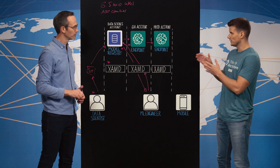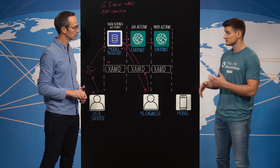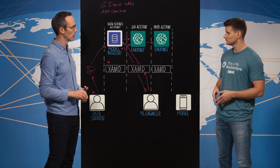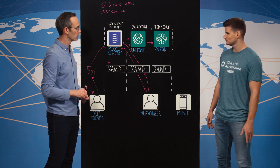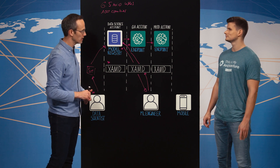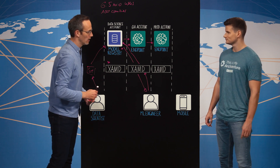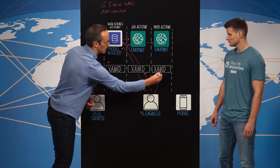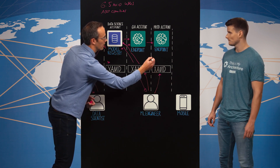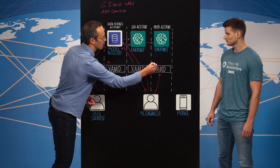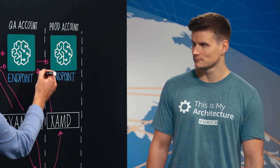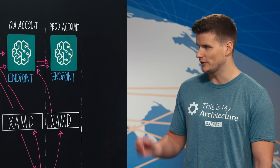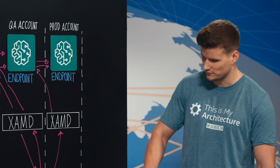In the QA account, the usual suspects of load tests are performed. Once these are done, the ML engineer invokes EXAMT again, but now in the production account, which then fetches the model artifact from the QA account and deploys it to the prod account. From there it's basically available to the clients.